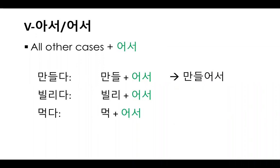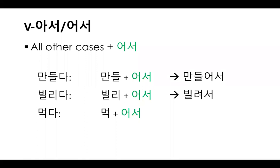빌리다, to borrow — stem 빌리, the vowel is 이, so it's not 아 and not 오. You attach 어서, making 빌려서. And 먹다 — stem 먹, the vowel is 어, so you attach 어서, making 먹어서.